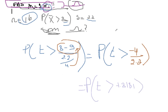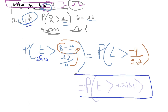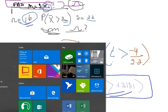I forgot to mention the degrees of freedom. For this t-statistic, degrees of freedom equals n minus 1, so it's 15. Now I have a t-value of negative 1.8182 with degrees of freedom 15, and I need to find the probability. I'll open my t-table.